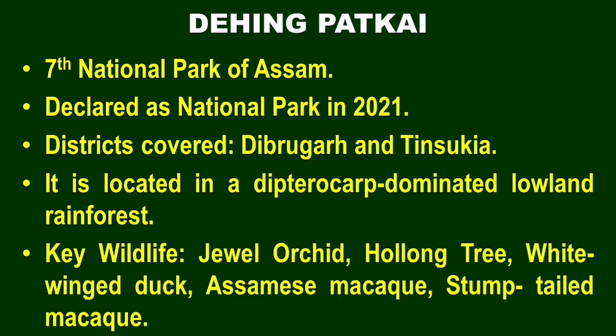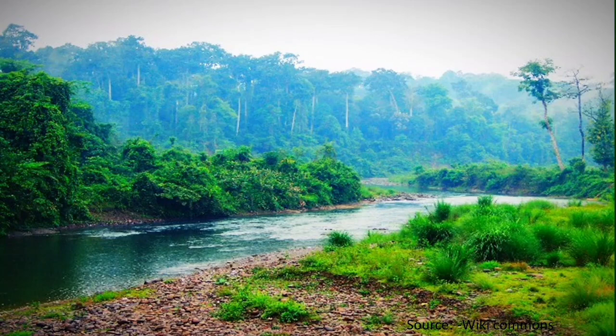Key flora includes the Javai Orchid and Hollong Tree. The White-winged Duck is also found here. Key animals include leopard and potentially tiger in coming days — since wildlife and science are always versatile and changing. The landscape is very good and there are a lot of interesting things in this national park.